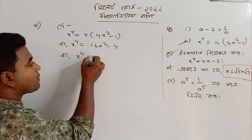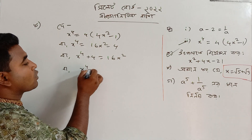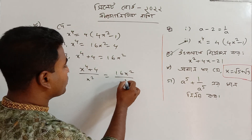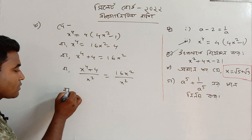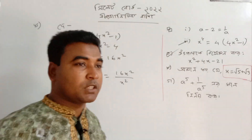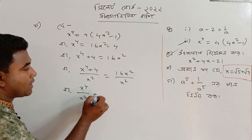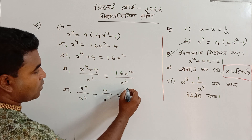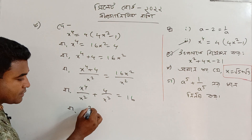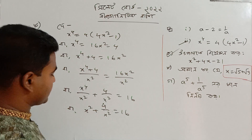We have x⁴ plus 4 equal to x squared. Then x squared plus 4 divided by x squared equals 16.